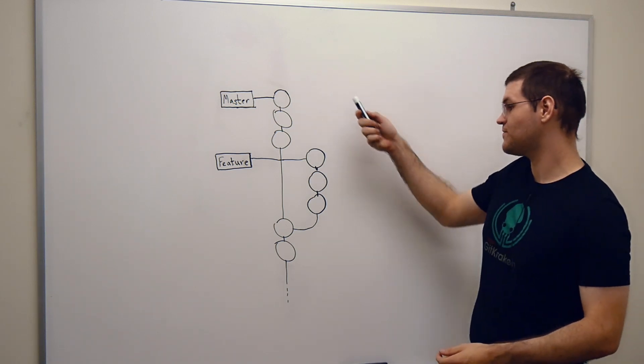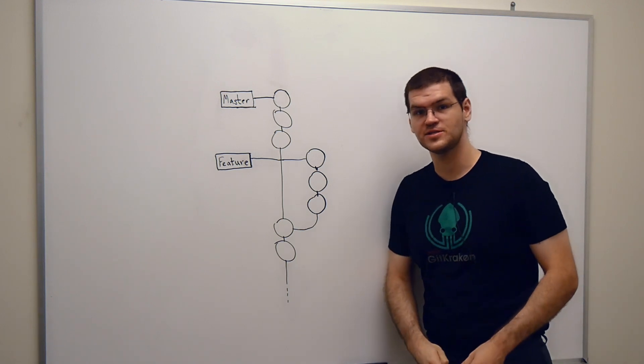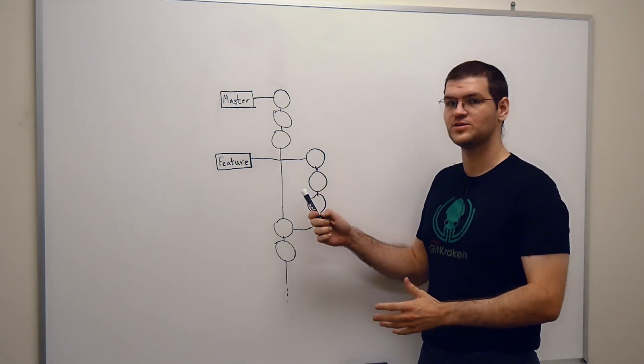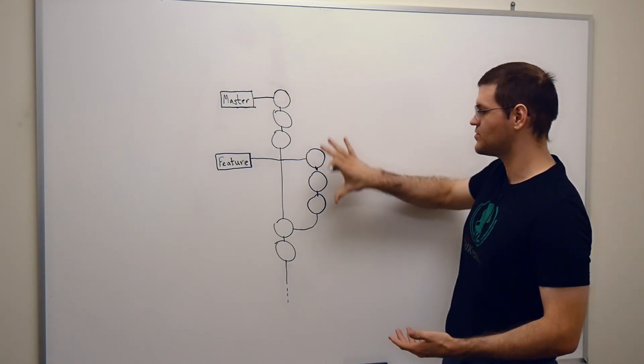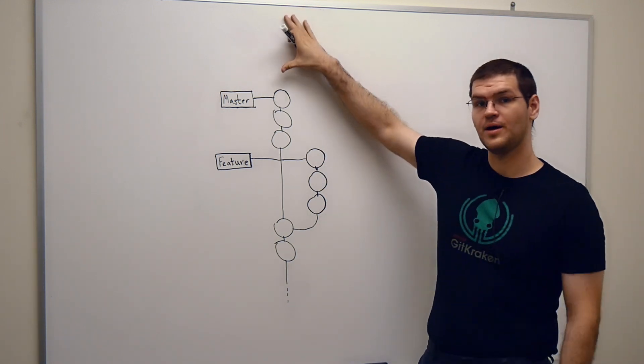So here we have a graph like you would see in Git Kraken. I've got my master branch, I've got my feature branch. And let's say I want to do something with feature branch, like I want to rebase it onto master. So I want to take this work, these changes, and I want to put them up on here.